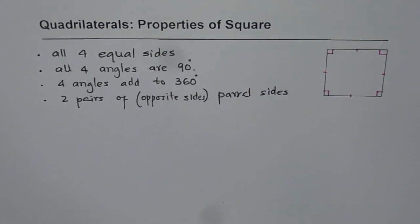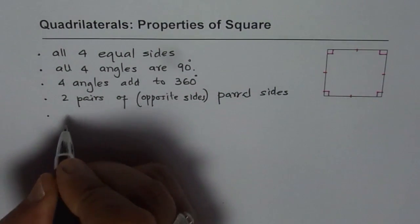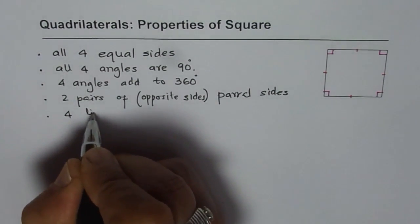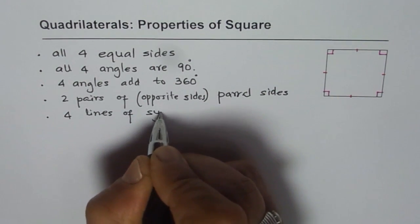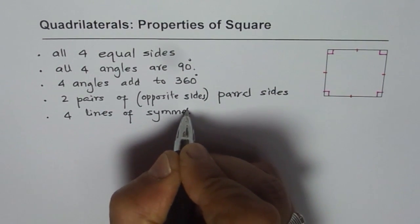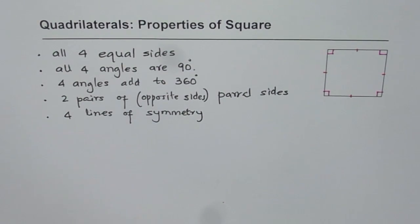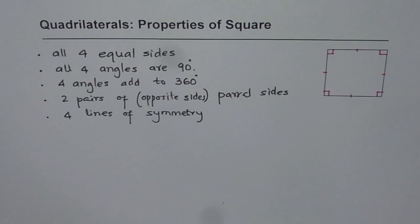What else you can say about this square? How about line of symmetry? It has four lines of symmetry. Can you draw them? Try to make a square and draw four lines of symmetry.